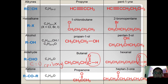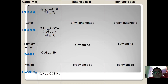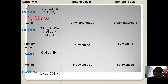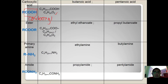Carboxylic acid has the functional group COOH, which is called a carboxyl group. The general formula of carboxylic acid is CₙH₂ₙ₊₁COOH, which can also be written as CₙH₂ₙO₂. Examples of carboxylic acids shown here include butanoic acid and pentanoic acid.